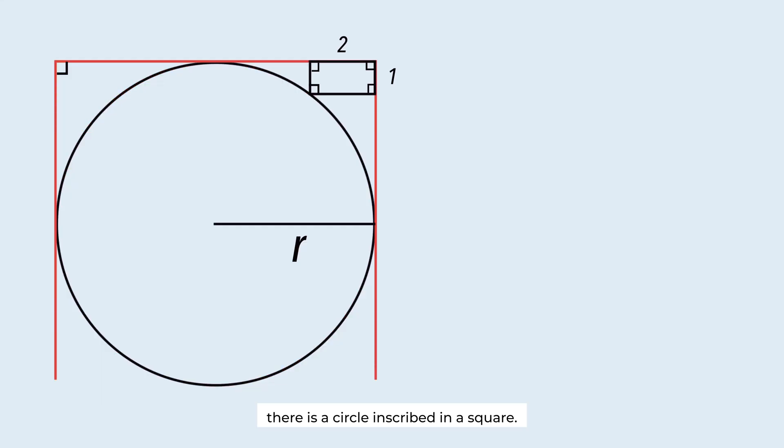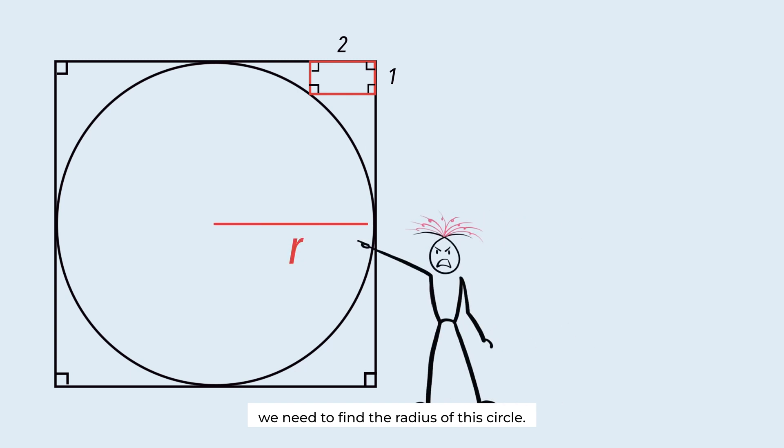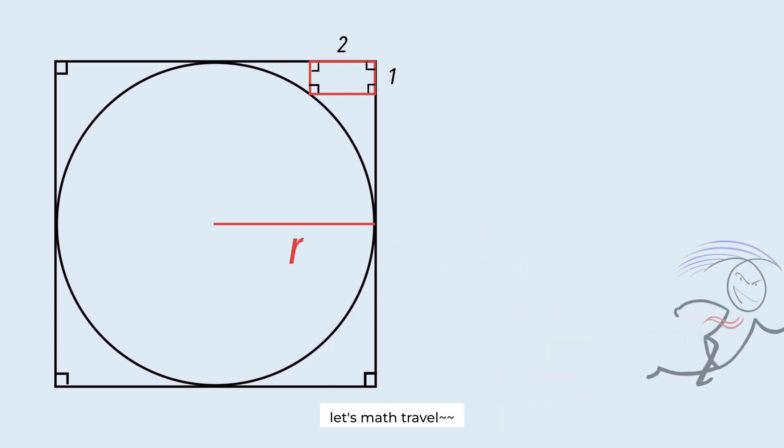There is a circle inscribed in a square. This quadrilateral is a rectangle. We need to find the radius of this circle. Let's math travel.